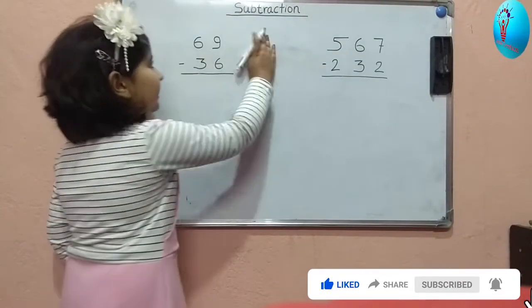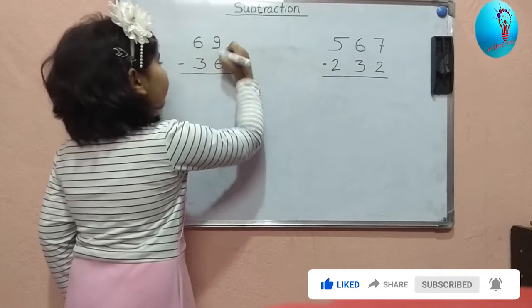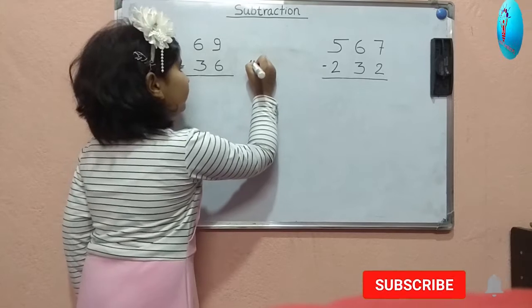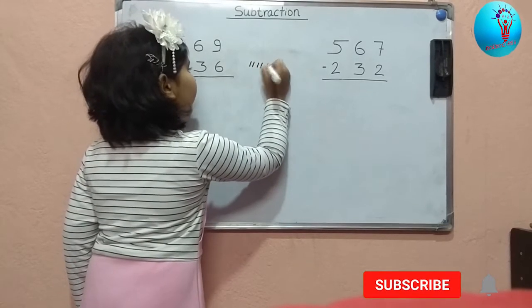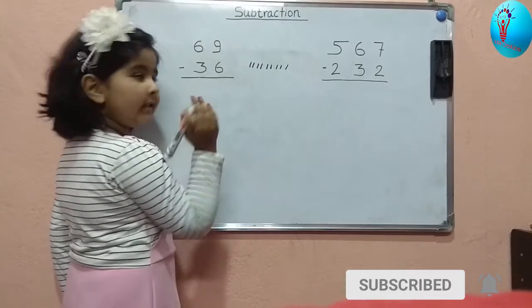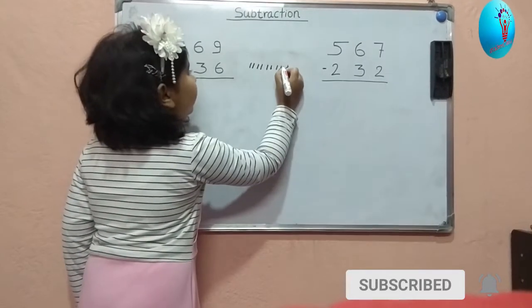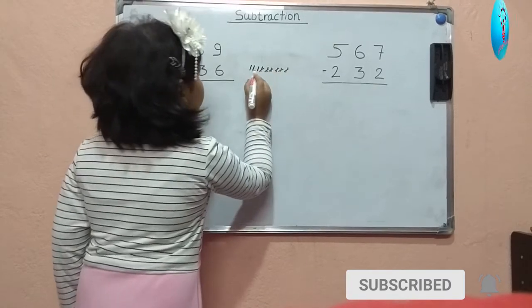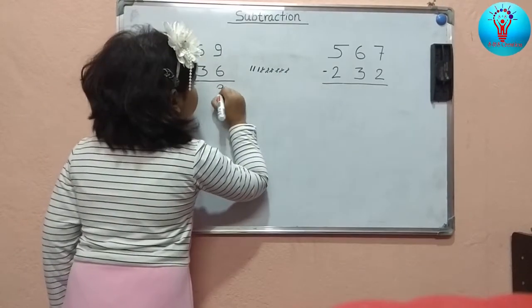So this is subtraction: 9 minus 6. First we need to draw 9 lines. 1, 2, 3, 4, 5, 6, 7, 8, 9. And how much we need to cut? 6. 1, 2, 3, 4, 5, 6. So here is 3 count. So here will be 3.